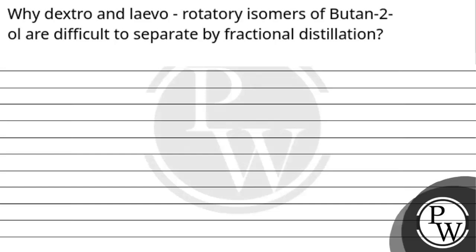Hello, so let's read the question. The question says why dextro and levorotatory isomers of Butan-2-ol are difficult to separate by fractional distillation?